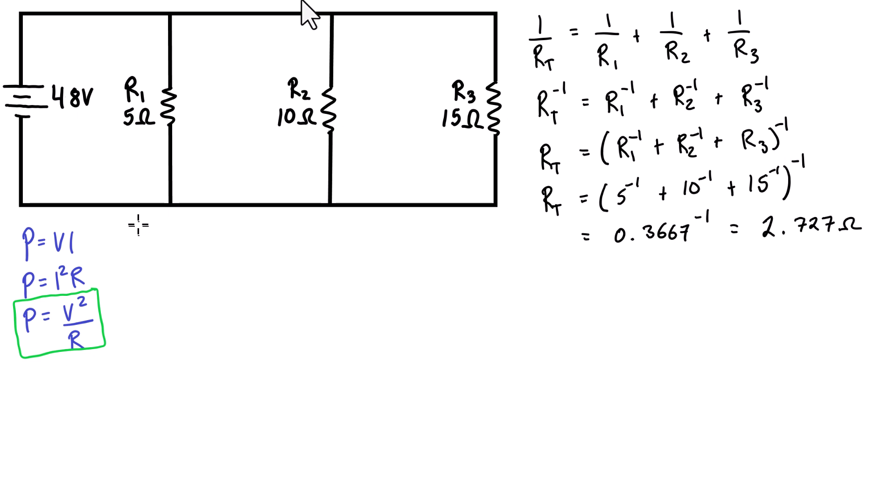As mentioned, V1 equals V2 equals V3, which equals our source voltage of 48 volts. We can calculate the power dissipation at resistor one using this formula. P1 is going to equal V1 squared over R1. When we plug this in, it's 48 volts squared over 5 ohms, and we get 460.8 watts.